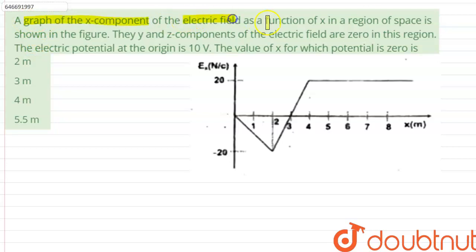The y and z components of electric field are zero in this region. The electric potential at origin is 10 volts. The value of x for which potential is zero. So the question is asking us to find out that for what value of x the potential is zero.